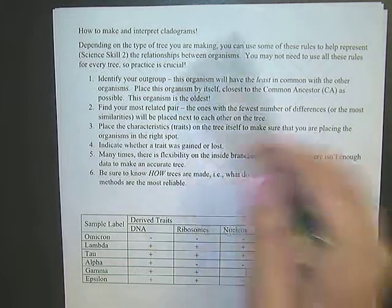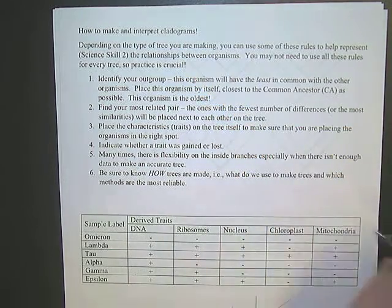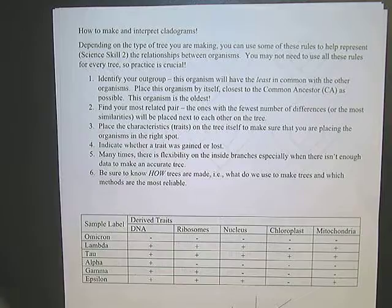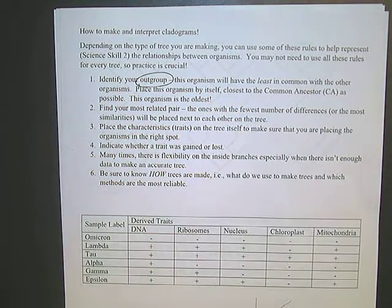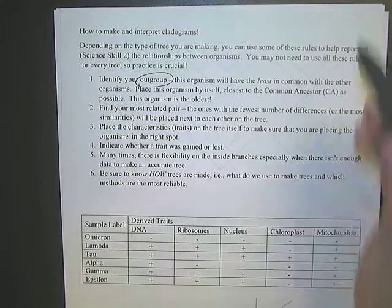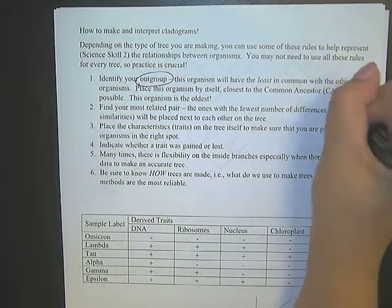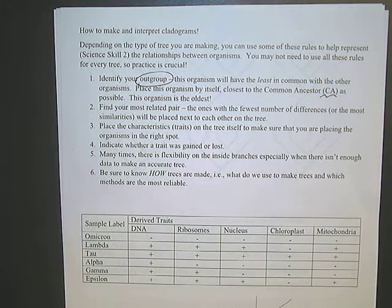So first thing when you're doing these cladograms, you need to understand that it's talking about relationships between organisms, and the first thing you're going to want to do is identify your outgroup. This is very, very important when you're doing these cladograms. Your outgroup is going to be the one that has the least in common with the other organisms, and you're going to want to place it close to your common ancestor.